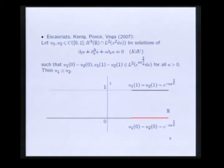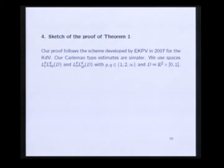Now I will review a brief sketch of the proof of our result. As I said before, we follow the scheme developed by Escauriaza, Kenig, Ponce, and Vega. We use Carleman type estimates and lower estimates. Our Carleman type estimates are simpler in the following sense. We use spaces L^p_T L^q_XY of the band D given by this product and L^p_X L^q_YT where the indices p and q are 1, 2, or infinity, which enables us to use elementary properties of the Fourier transform.